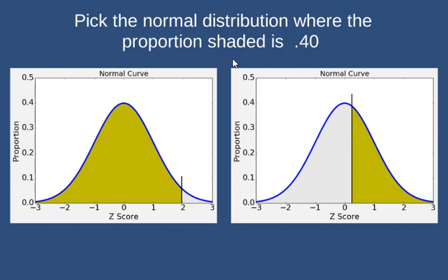Let's get some experience with proportions. So we want to pick the distribution where 0.4 of it is shaded. Now we'll pick the distribution where 0.25 or one fourth of it is shaded.